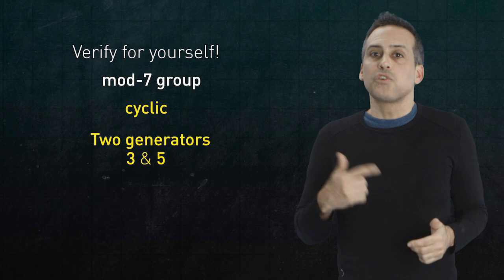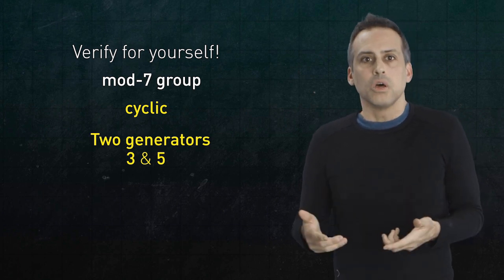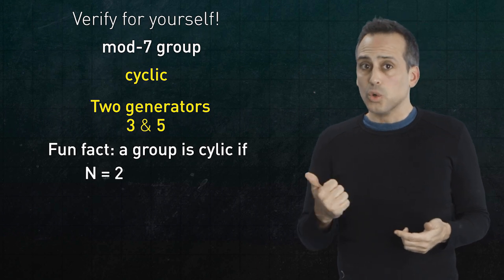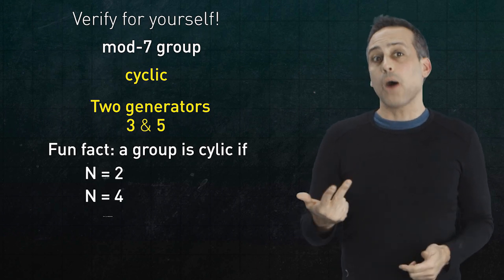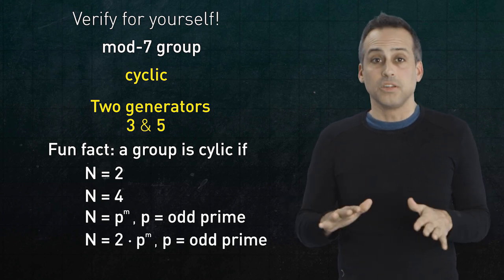By the way, if you're wondering which mod n groups end up being cyclic and which ones don't, the cyclic ones have n equal to 2, 4, a power of an odd prime, or twice a power of an odd prime. That's a neat fact. Not obvious. Anyway,